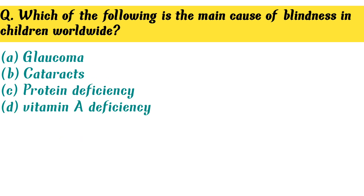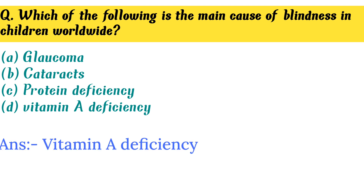Which of the following is the main cause of blindness in children worldwide? Option D. Vitamin A deficiency is the correct answer.